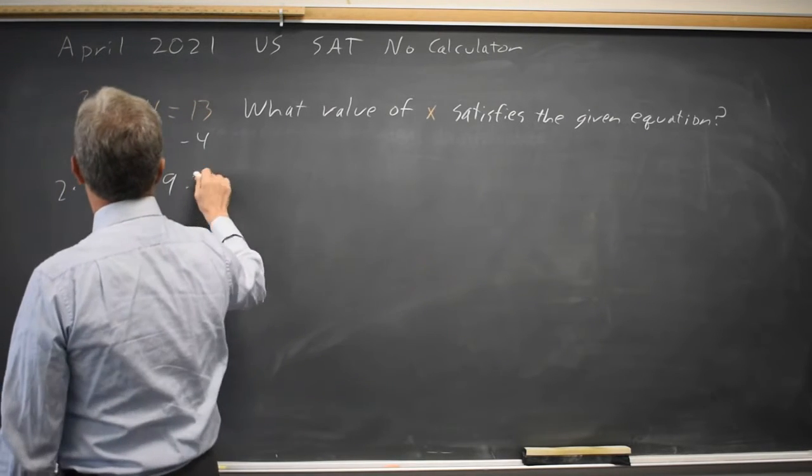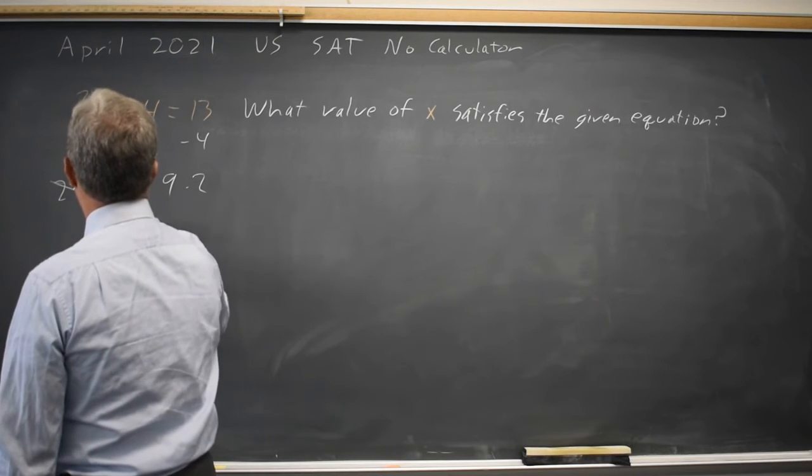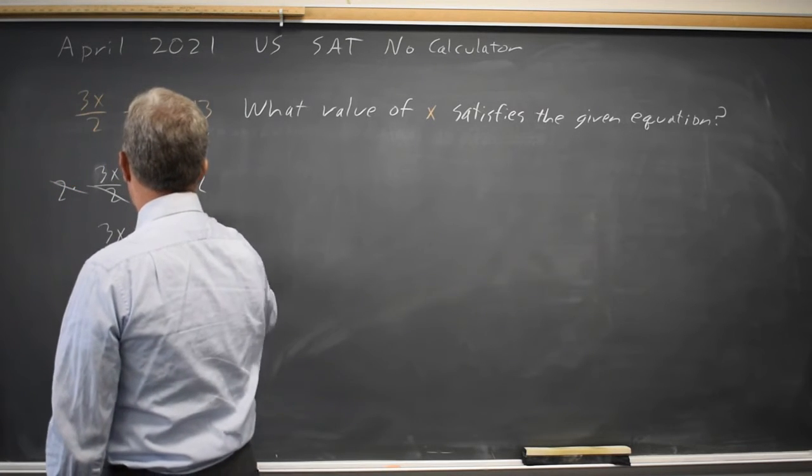If I multiply both sides by 2, 2 over 2 is 1, leaving me 3x on the left. 9 times 2 is 18 on the right.